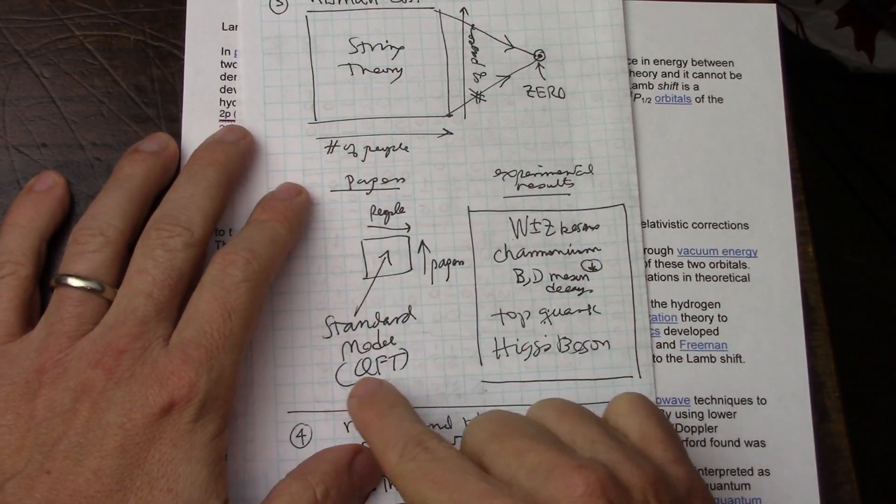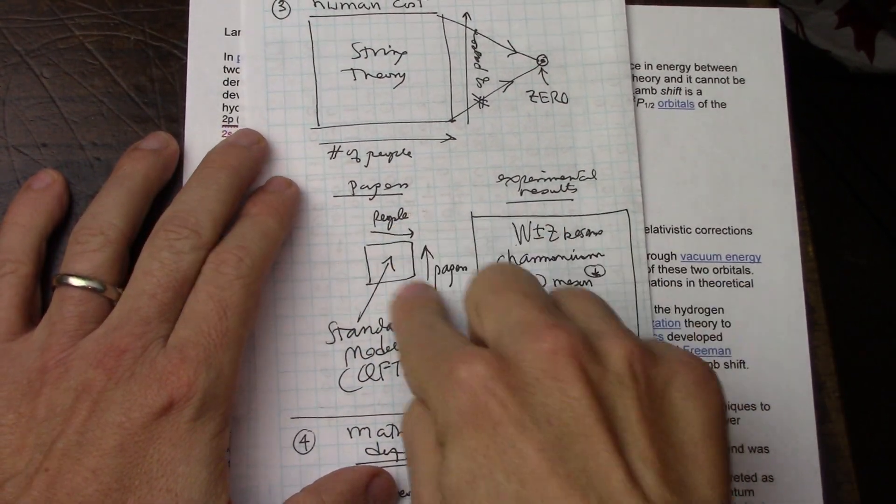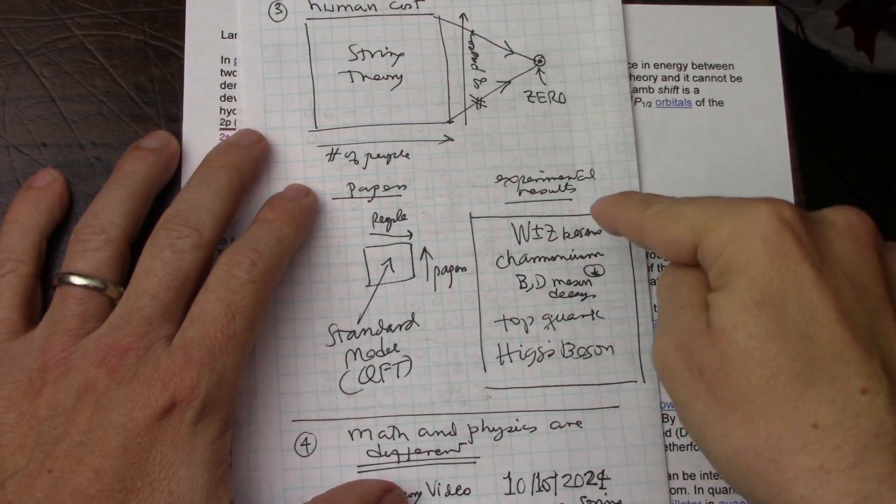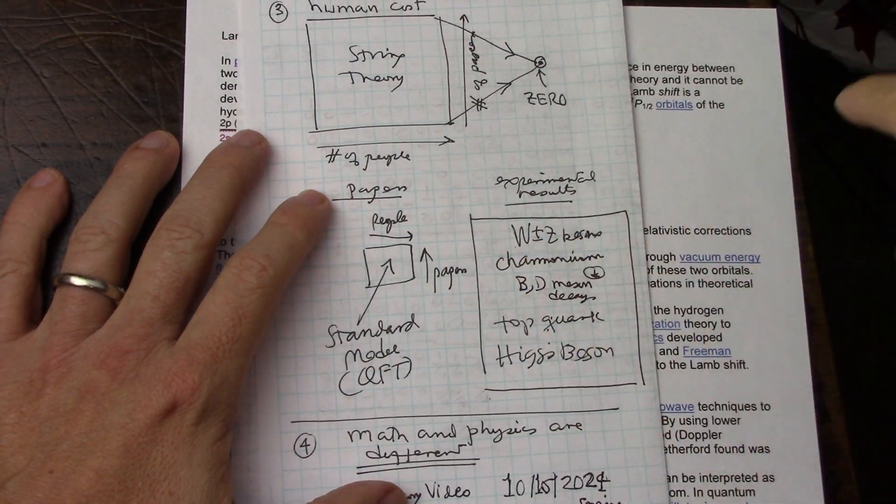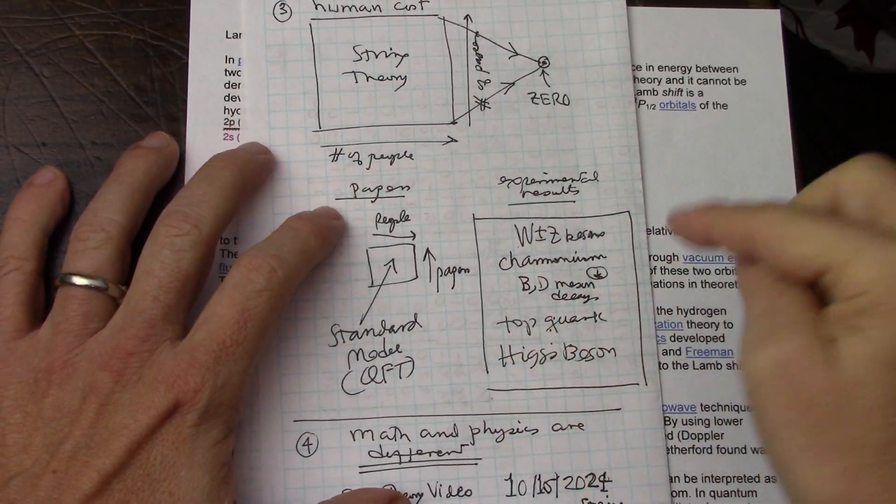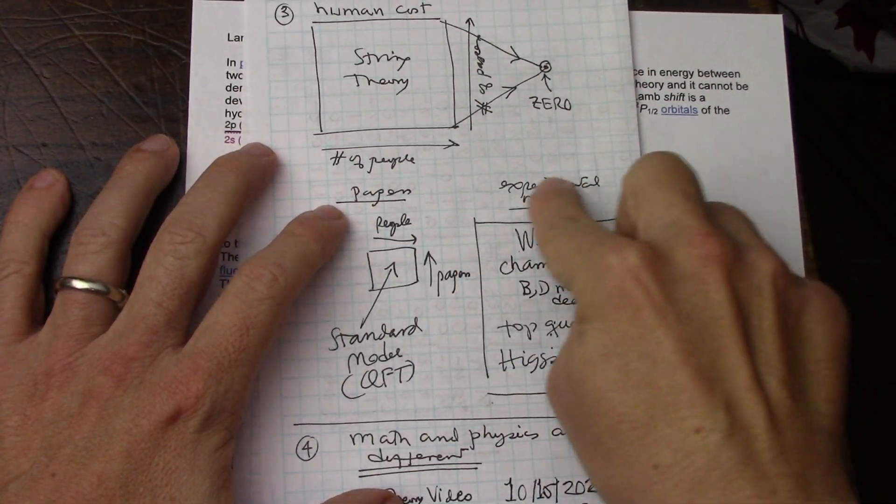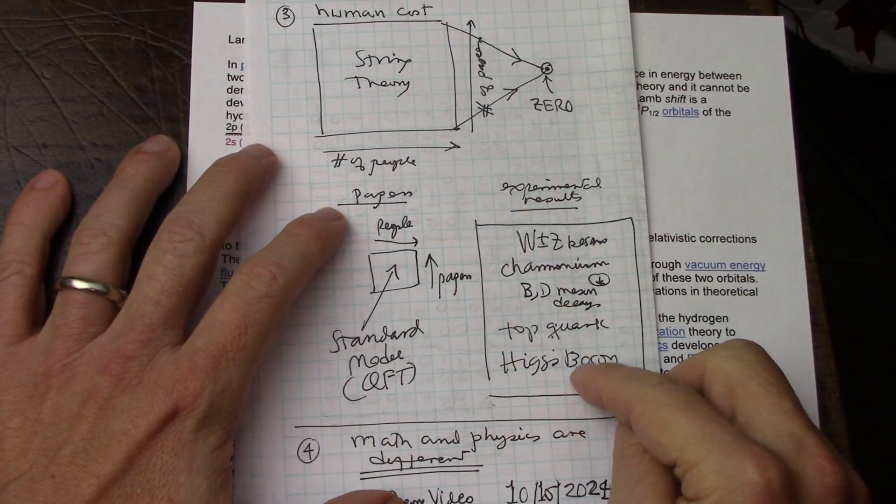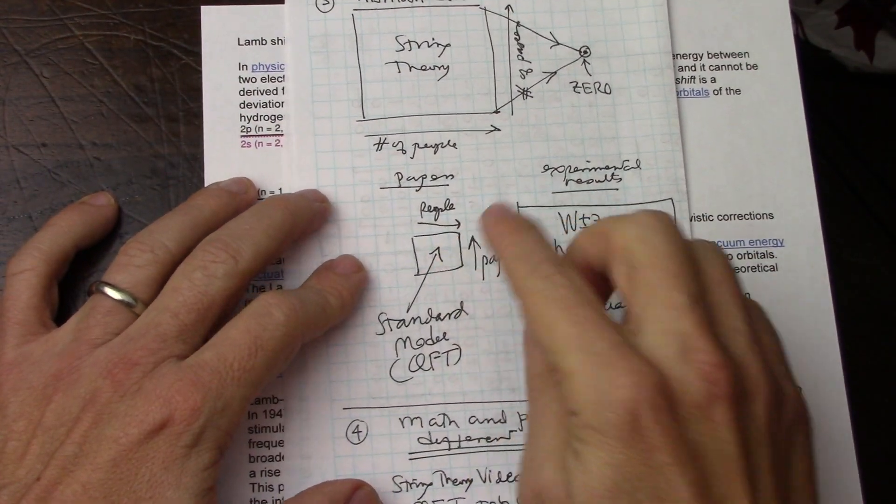All right, but in the case of the standard model, a few people were working on it. There were some papers, and then W/Z bosons, charmonium, B and D mesons, the top quark, the Higgs boson, a bunch of experimental results. And that's very happy for the standard model.